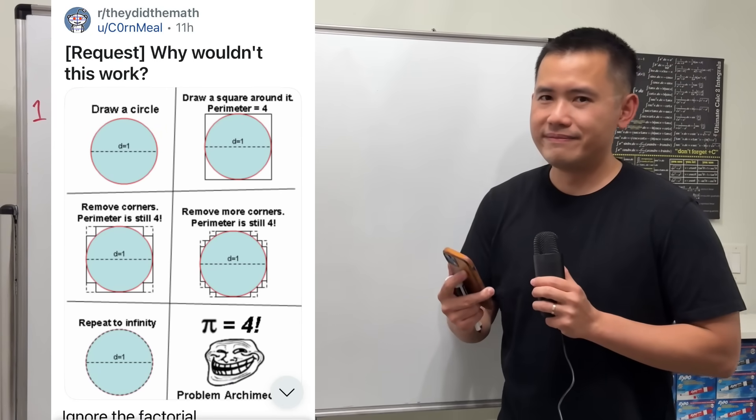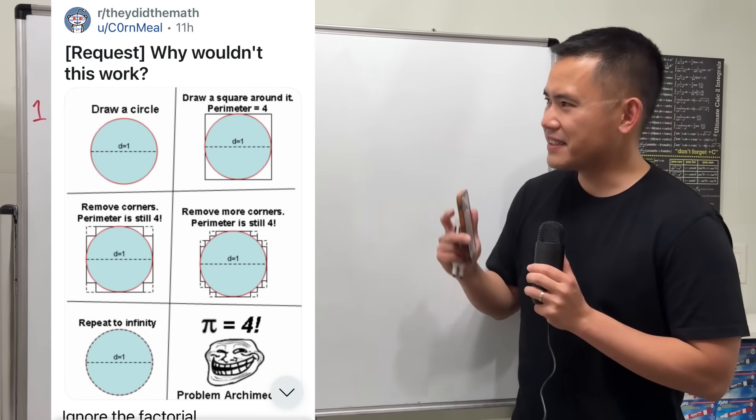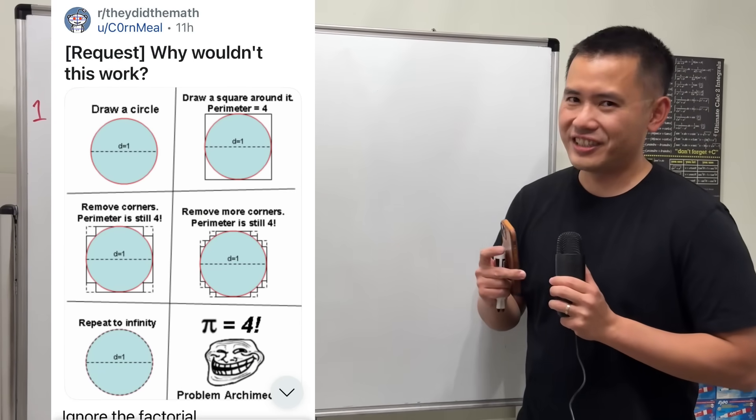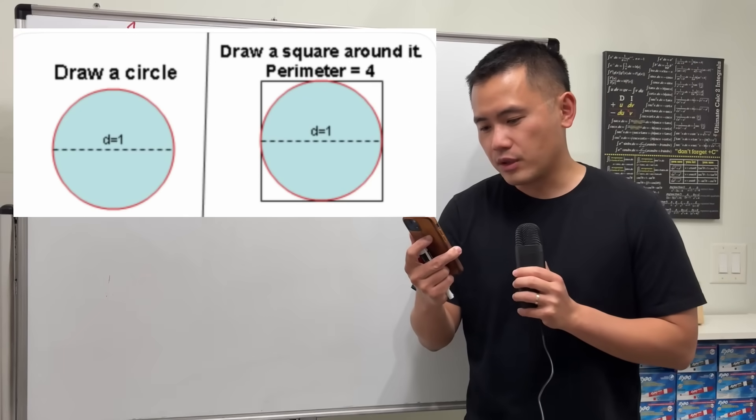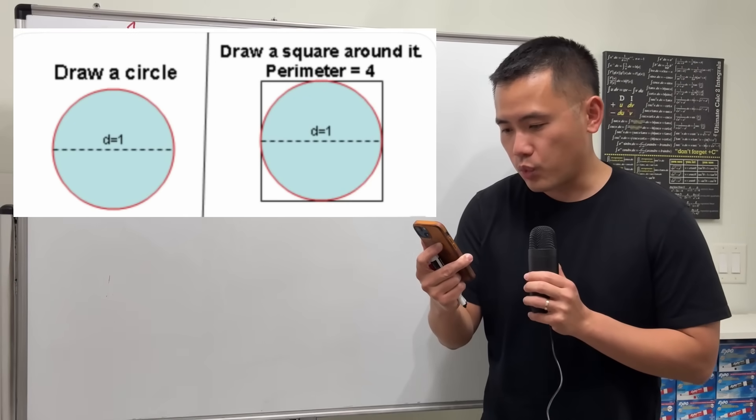Why wouldn't this work? This is a classic one. Check this out. First, we have a circle with diameter 1.